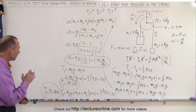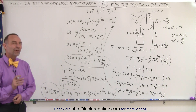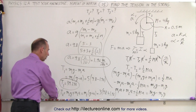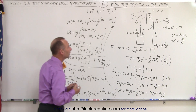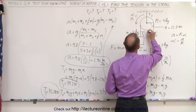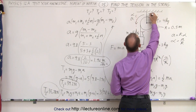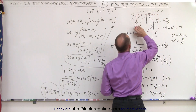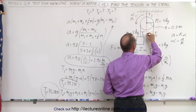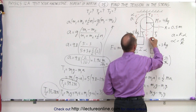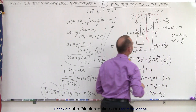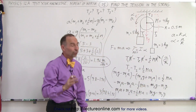Now we've found T1 and T2. How do we find T3? To find T3, we have to draw a free body diagram around the pulley system. We need to include all the forces acting within that box, including the weight of the pulley, which is big M·g, with big M being 4 kilograms.